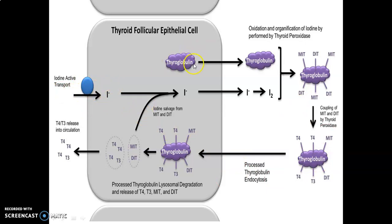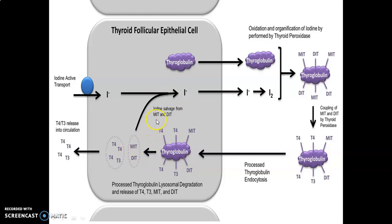In the overall process, iodide is actively transported and trapped on thyroglobulin, where it is converted to MIT and DIT. By coupling of MIT and DIT via thyroid peroxidase, T4 and T3 are formed. Lysosomal degradation then occurs and T4 and T3 are released, while some MIT and DIT is recycled for the preparation of thyroid hormones. T4 is further converted to T3 in peripheral tissues.